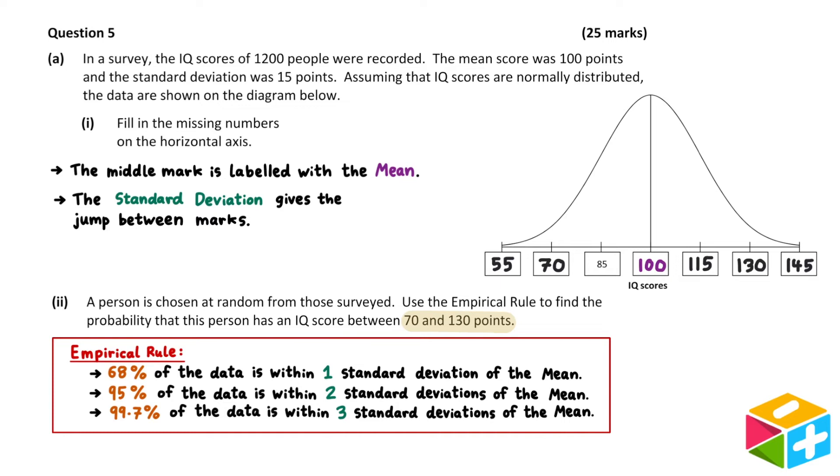In our question, we are interested in IQ scores between 70 and 130. Remember, our mean is 100 and our standard deviation is 15. 70 is two standard deviations to the left of the mean. 130 is two standard deviations to the right of the mean. So 70 to 130 corresponds to the region of data which is within two standard deviations of the mean. So our answer here is 95%.